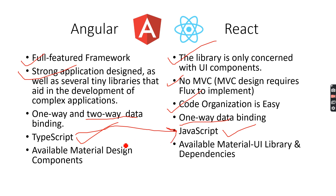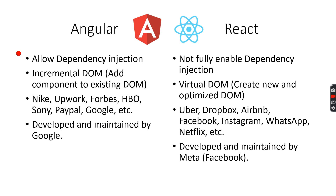Angular has a wide range of material design components, while React also has some material UI libraries and dependencies for UI development. If you want to send data from one component to another — called dependency injection — Angular allows it, and React also allows it in most cases. Angular is based on the incremental DOM concept, while React is developed on the virtual DOM concept.